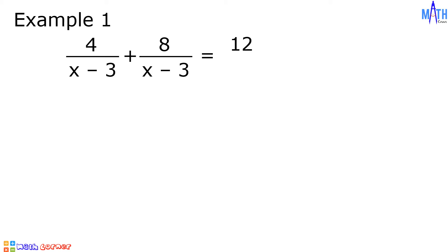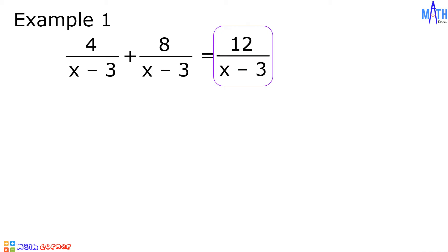And then, copy the common denominator, which is x minus 3. We need to express the answer in lowest term. Since 12 over x minus 3 is already expressed in lowest term, 12 over x minus 3 is the sum or the final answer.